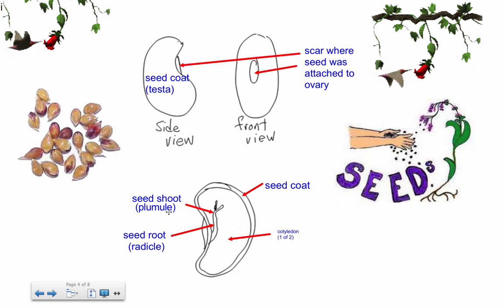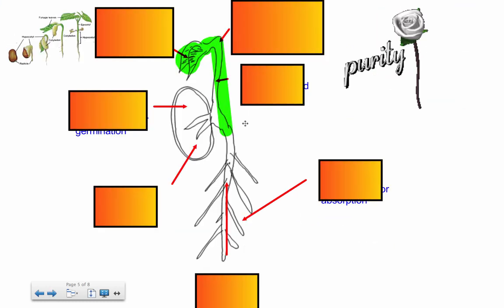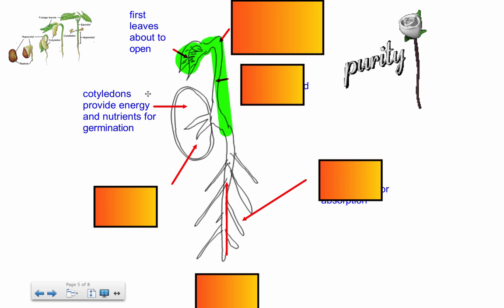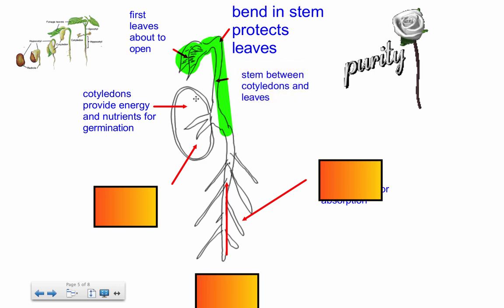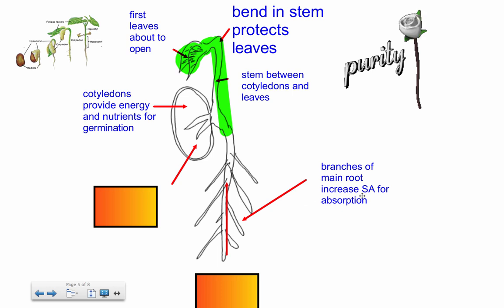So there's a seed coat. The plumule and the radicle - the plumule is going to turn into the seed shoot moving upwards, and the radicle is going to become the seed root, bending and moving downwards. As the seed grows, we see the cotyledons - if you're a dicot you have two, if you're a monocot you only have one. The first leaves are about to open, and there's a bend in the shoot as it moves up to protect the leaves as they sprout. The roots branch out with little root hairs for increasing surface area.